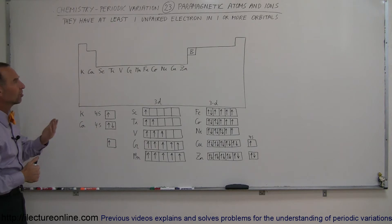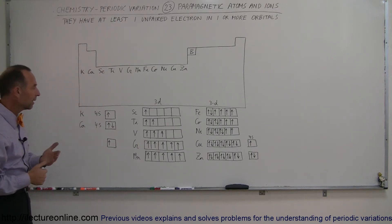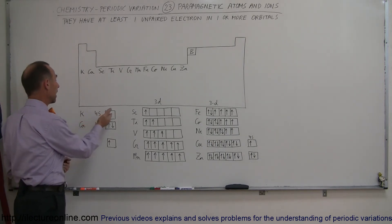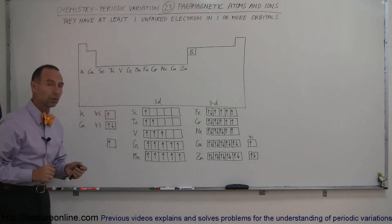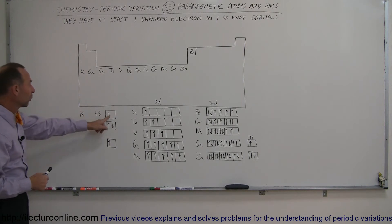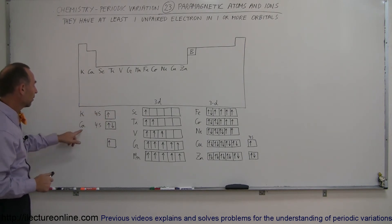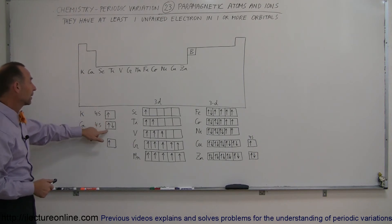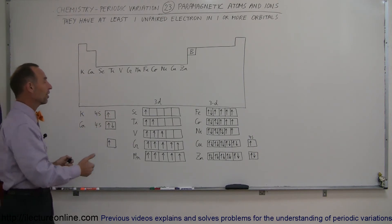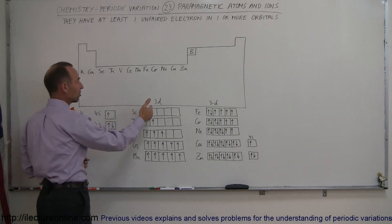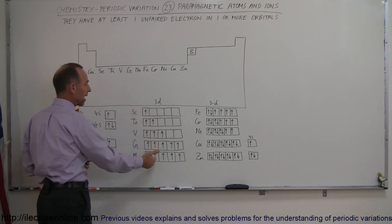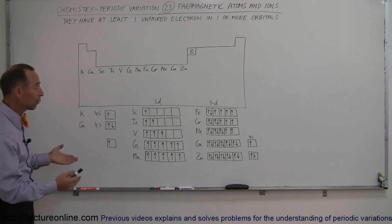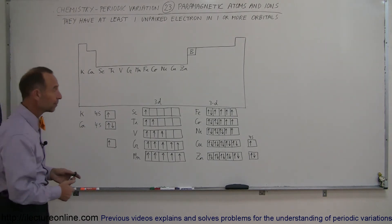We have to understand which atoms and ions are paramagnetic. There are actually a lot of them — most of them are. For example, potassium has only one electron in its 4S orbital, as opposed to calcium which has two, so calcium is not paramagnetic but potassium is. Notice that most of the metals like scandium, titanium, vanadium, chromium, and manganese only have one electron in their 3D orbitals, so all of them are paramagnetic.